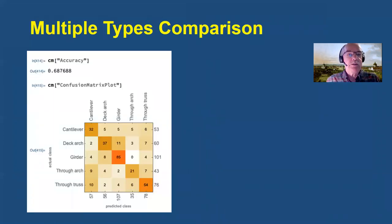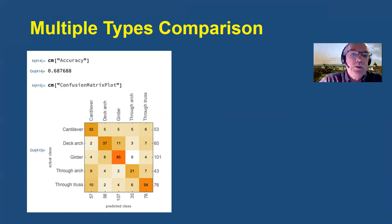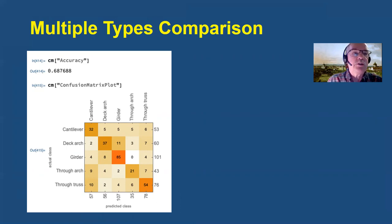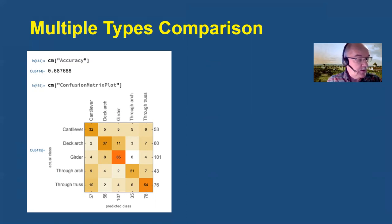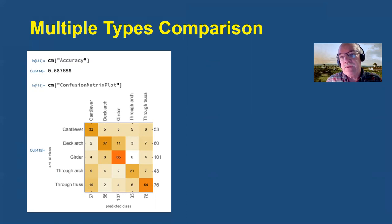Bill extended the analysis to train Mathematica to identify five different types of main spans: cantilevers, deck arches, girders, through arches, and through trusses. The accuracy wasn't quite so good this time — only about 69%. There were no girders predicted to be through trusses, which is understandable because the forms are quite different. There were, however, cantilevers classified as deck arches and deck arches classified as cantilevers — in this case, one might actually have some sympathy for the computer.